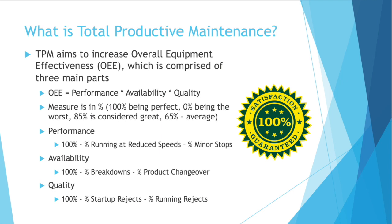So if you're running at a reduced speed and that slows you down 10% of your total time, you subtract 10% for running at a reduced speed. If you're stopped for a whole hour and that's an eighth of your day, then you would subtract out 12.5% for performance as well.